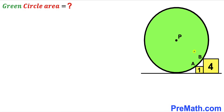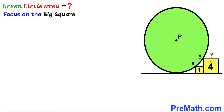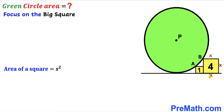Let's get started. We focus on the big square whose area is 4 square units and calculate its side length. Recalling the area formula, area equals s squared. Labeling the side length as x, we have x squared equals 4. Taking the square root of both sides, x equals positive 2 units. So the side length of the larger square is 2 units.